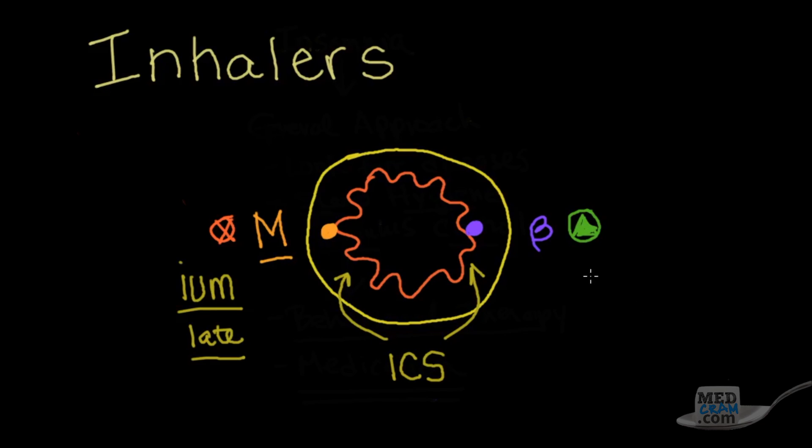Now on the beta agonist side, all of these end in OL. So you'll know formoterol, salmeterol, albuterol, all those things end in OL. Now how do you know whether it's an inhaled corticosteroid? You'll know that because it ends in ONE or ON, like fluticasone, mometasone, etc. So once you know those three, then you'll be able to put those together. We have the muscarinic antagonists, we have the beta agonists, and we have the inhaled corticosteroids.